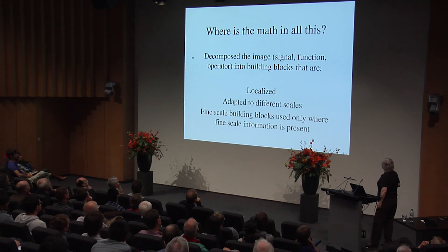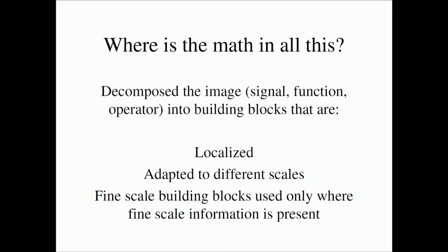Where's the math in all this? We've decomposed the image — or a signal, function, or operator — into building blocks that are localized and adapted to different scales. Fine-scale things are very localized; coarse-scale things are wide. The important point is that fine-scale building blocks are used only where needed — where there's detail to reconstruct. Where there's no detail, you don't bother. Morally speaking, you first send information about where detail is needed, then send the coefficients.